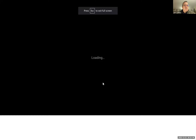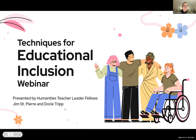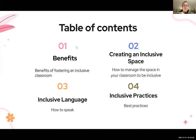So first, let me share my screen. These are techniques for educational inclusion. We're going to be dealing with four major areas: the benefits and reasons that we want to practice and foster inclusion in our classrooms, creating an inclusive physical space, the metaphorical space — the language that we use — and the inclusive practices that we can bring. Some of these are reviews, and some of you probably have more to offer than I do. I encourage you to send us your ideas, either through the emails we'll show at the end or through the humanities website at the Department of Education.